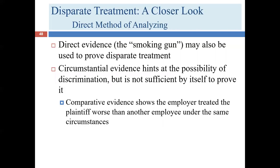We talked previously about direct evidence. A particular category within circumstantial evidence is comparative evidence — it isn't a smoking gun, but it is pretty significant. If you didn't fire the white employee, why are you firing the Hispanic employee for doing the same thing? Now there might be a good reason: maybe the white employee had much longer service, or the failing was less significant in his role, or there's been a change in manager. Just because you have a different comparator doesn't necessarily mean it's a slam dunk winning case for the plaintiff, but it is a very good fact.